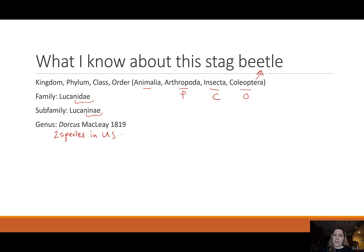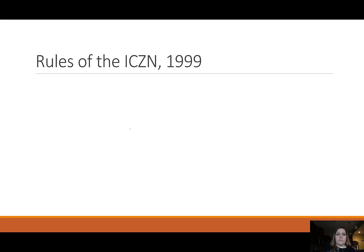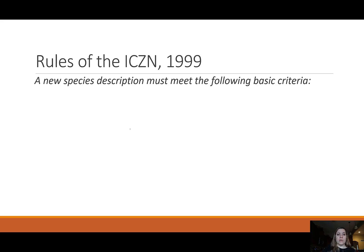So I have a new species. After a lot of lab work — perhaps dissecting and examining under a microscope — I know this is new. I've also checked with other collections to see if perhaps others have been collected without a name assigned, because someone could have described it before without the description being findable. Here are the rules I have to follow in order to describe the species.